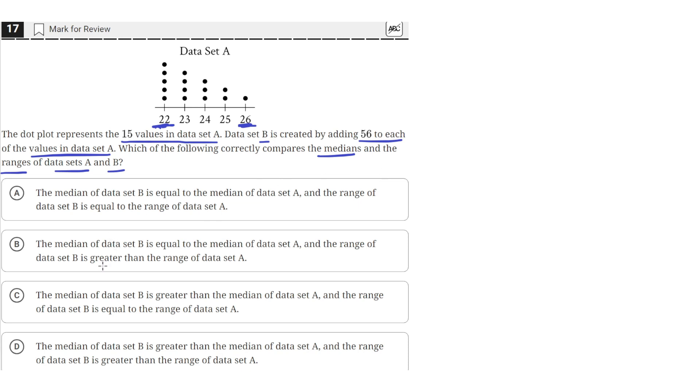So that means we can rule out any answer choice that says the range is not the same. Answer choice B is saying the range of data set B is greater than the range of data set A, so that's wrong. And answer choice D is saying the range of data set B is greater than the range of data set A, so that is also wrong. So it's between A and C.